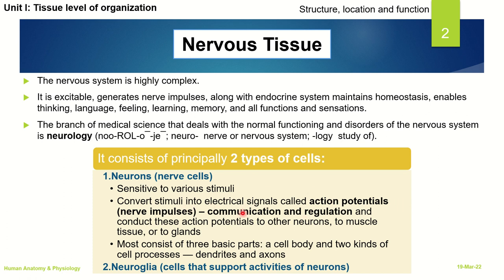Neurons are responsible for communicating, regulating, and propagating action potentials to different other neurons, or to muscles, tissues, or glands. Most neurons comprise of three basic parts: one cell body and two kinds of cell processes termed as dendrites and axons. We will study ahead what each of these terms mean.